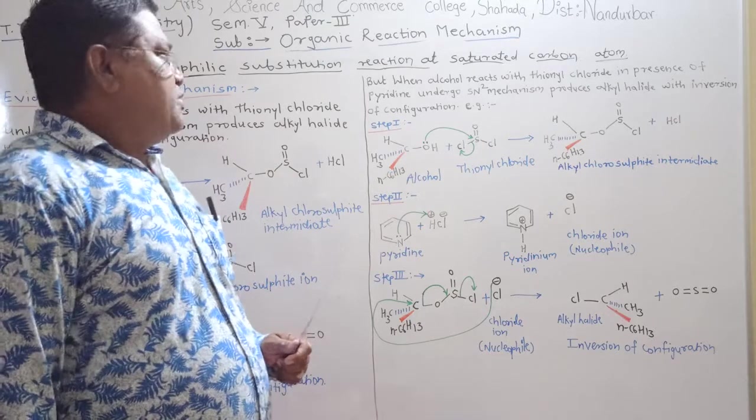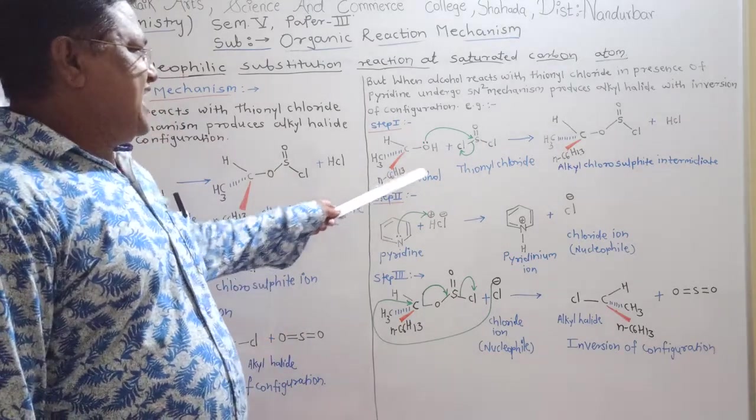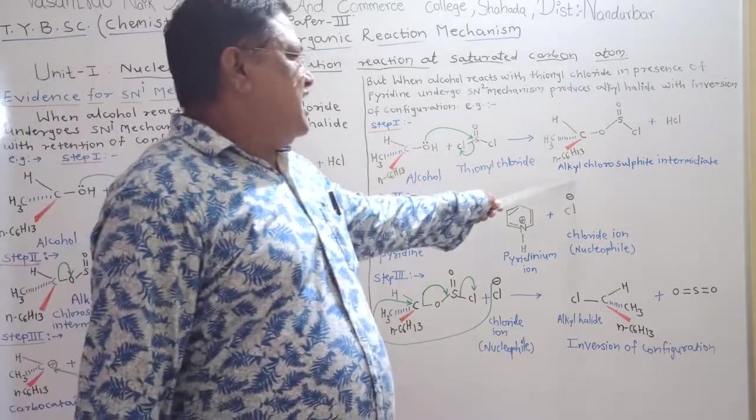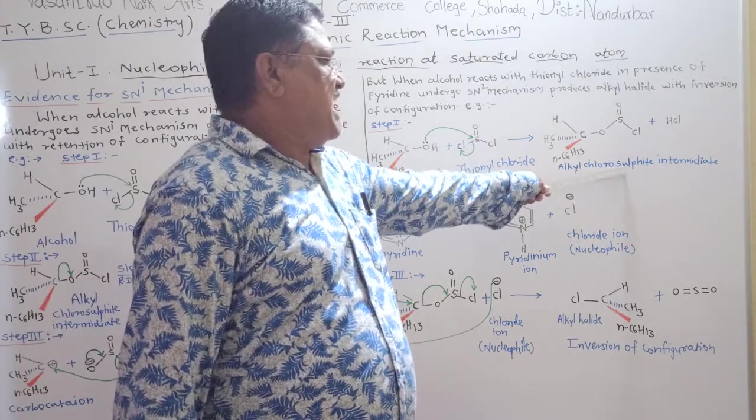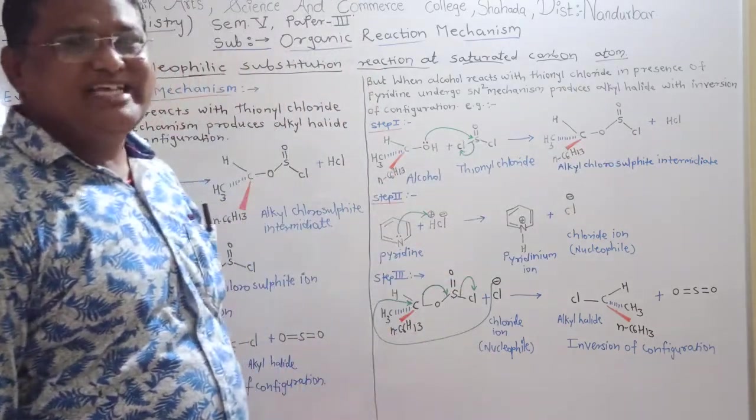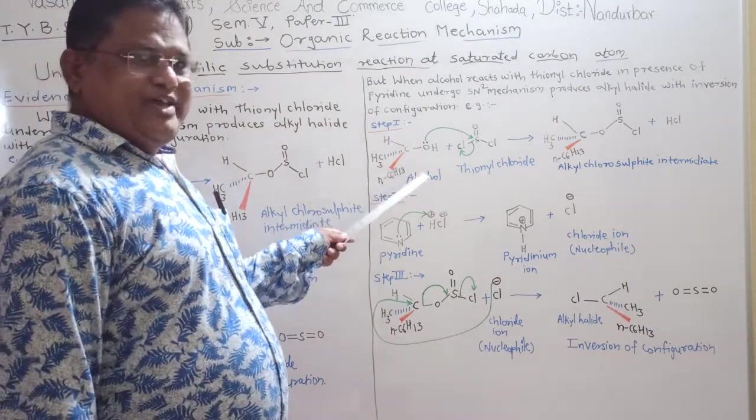Now, in this case, when alcohol reacts with thionyl chloride to form alkyl chlorosulphite as an intermediate and HCl as a product. In the same way,